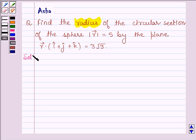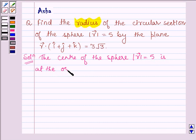Let's start with the solution. The center of the sphere with magnitude of r vector equal to 5 is at the origin, and radius is equal to 5.